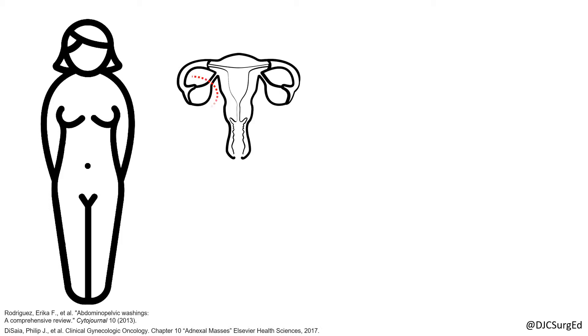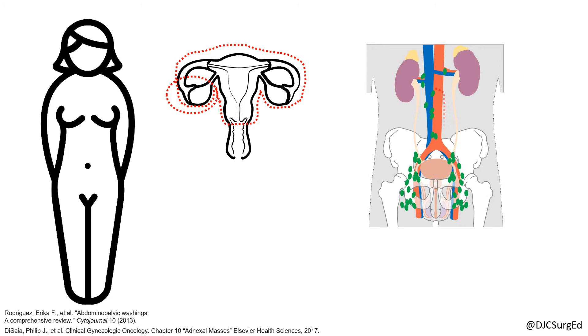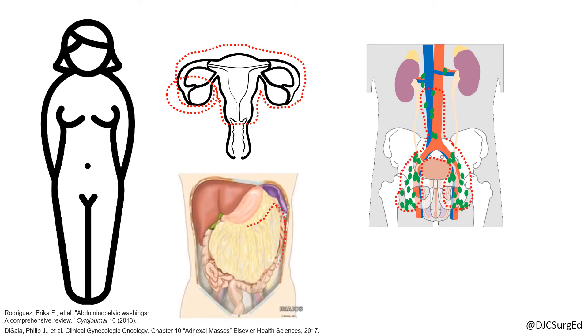Staging of ovarian cancer is surgical and consists of a unilateral oophorectomy for fertility sparing, or total abdominal hysterectomy and BSO if childbearing is complete, lymphadenectomy of pelvic and periaortic lymph nodes, omentectomy, and peritoneal biopsies and washings.